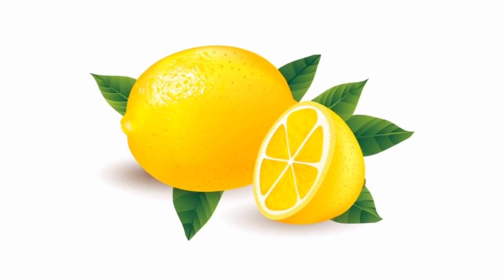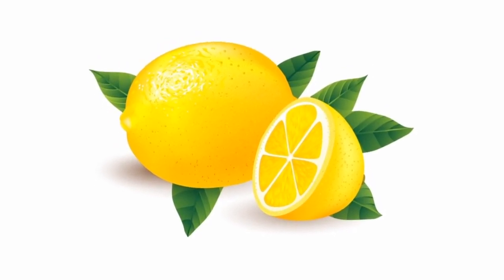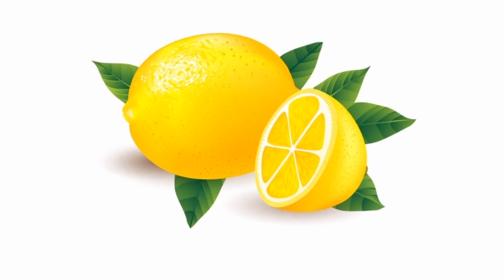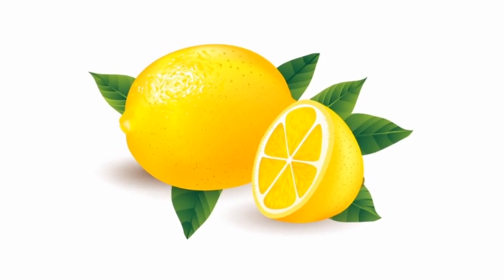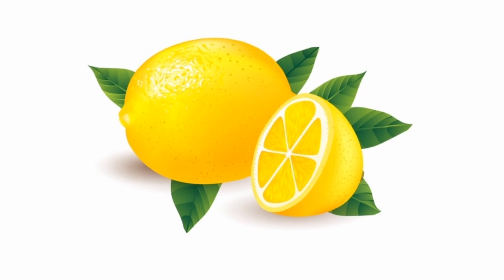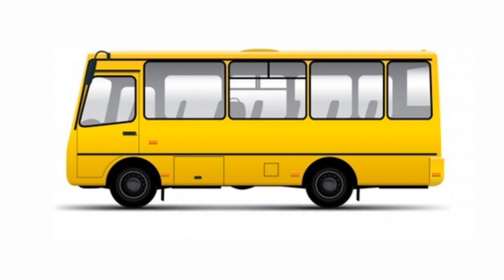What is this? This is a lemon and the lemon is yellow in color. What is this? This is a bus and the color of the bus is yellow.